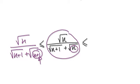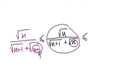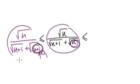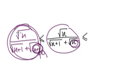Following on from the previous video, we got to this stage here where if we can make this denominator bigger than this one here, then this fraction here would be smaller than this fraction here.